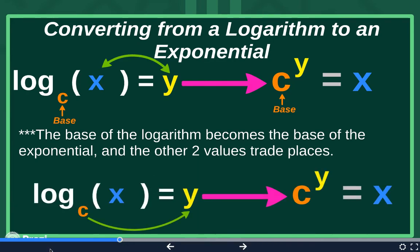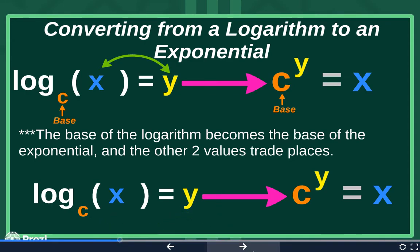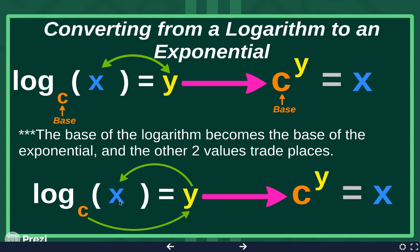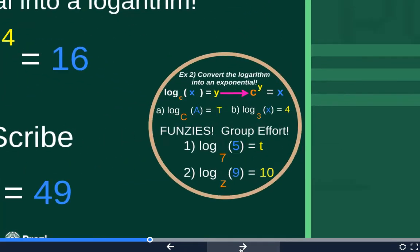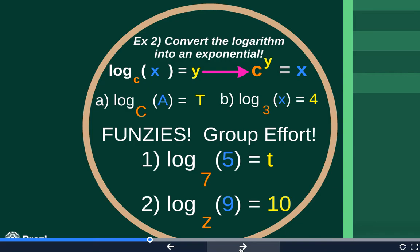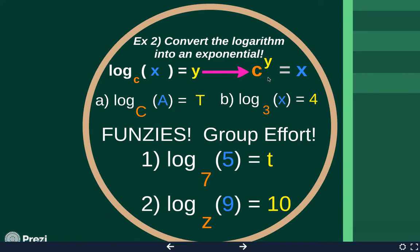So your y hops with the base and the x hops to the other side of the equal sign. The base stays the same; the other two values trade places. Or if you prefer the roundabout method, you start with the base — the base of the log is c, so c raised to the y power, cross that equal sign, equals x. Converting is very essential when we start solving for logarithms and exponentials. Example two, parts a and b, we'll be starting with a logarithm and converting it into an exponential. Pause the video and work example two.